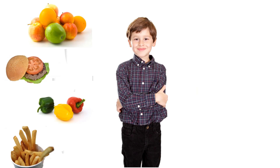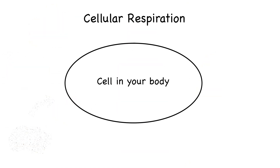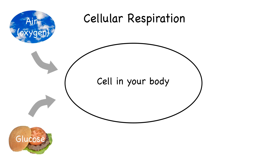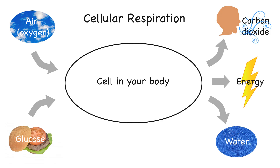The food that you eat is converted inside your body to generate energy that you can use for many things. This process is called cellular respiration and happens inside your body. Your cells use the glucose from your food and oxygen from the air you breathe and turn it into energy, water, and carbon dioxide gas that ends up in your exhaled breath.